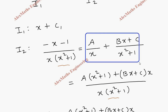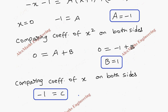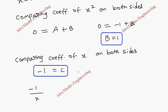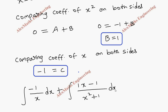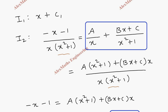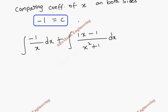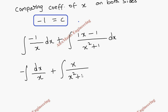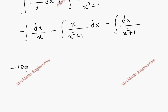After getting the values of A, B, and C, we substitute them back. A is minus 1, B is 1, and C is minus 1. So I2 becomes the integral of minus 1 over x, plus x over (x² plus 1), minus 1 over (x² plus 1), all times dx. Let's split this into three separate integrals.